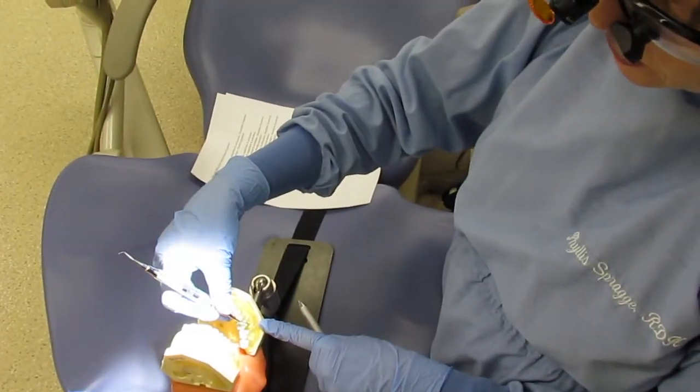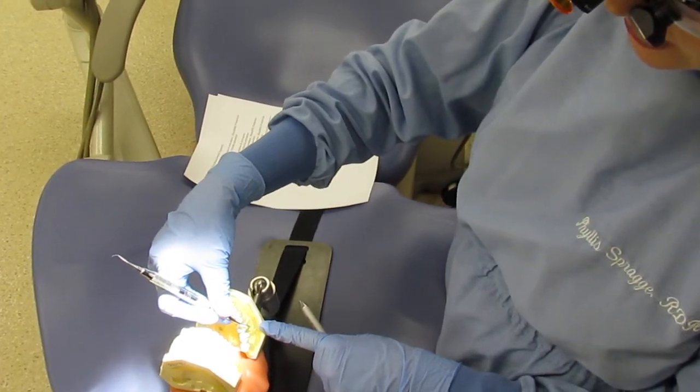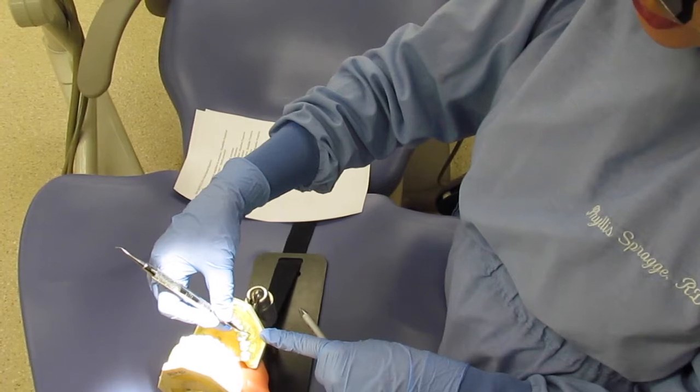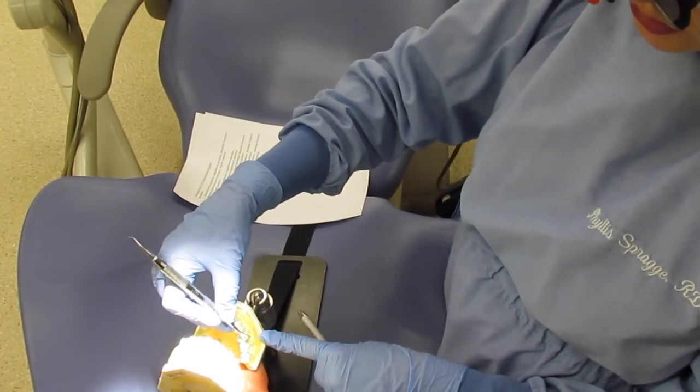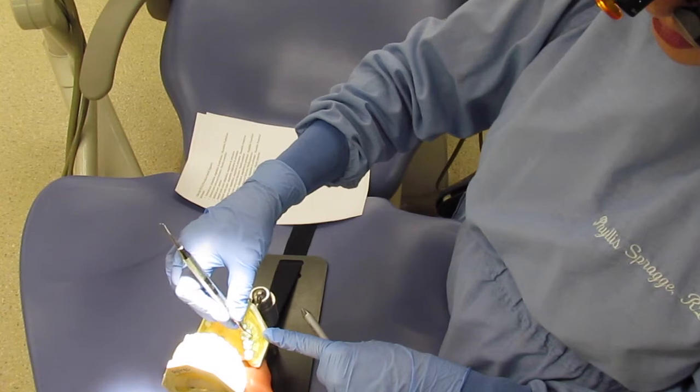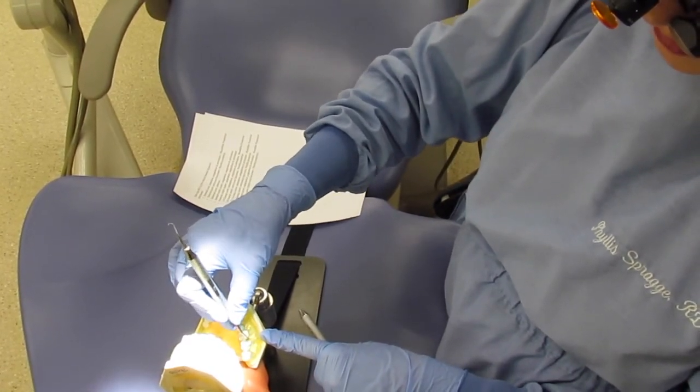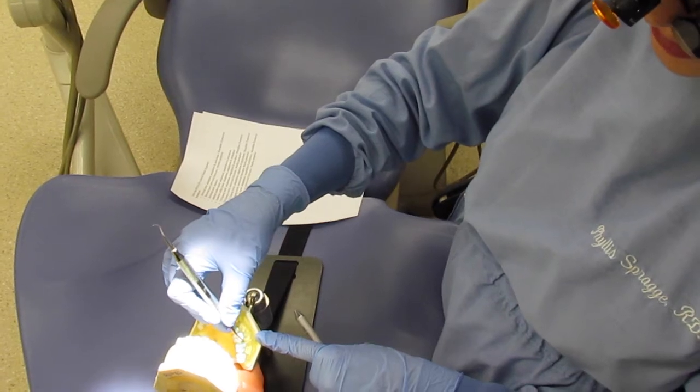Universal curette on the distal surface. Your fulcrum is across the left side anteriors and your toe is pointing toward the distal. You're on your secondary blade and you're rocking up and down, little overlapping strokes and pivoting into the distal area.